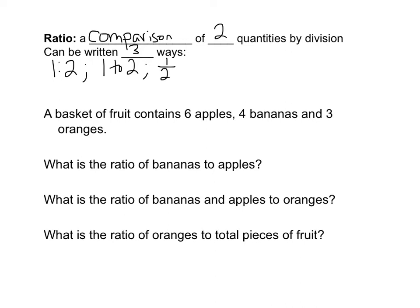So an example we can look at is a basket of fruit contains six apples, four bananas, three oranges. So we want to know what is the ratio of bananas to apples. So we are comparing bananas, the number of bananas to apples. Well there's four bananas and six apples, so we could say four to six. We could say four to six, or we could simply write it as four over six.